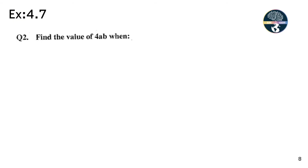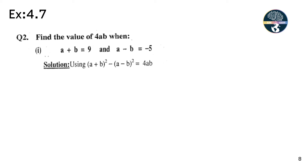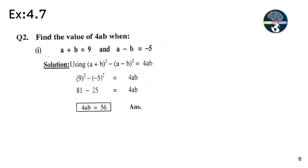Question 2: Find the value of 4ab when a + b = 9 and a - b = -5, using (a + b)² - (a - b)² = 4ab. Putting values: (9)² - (-5)² = 4ab, so 81 - 25 = 56. The value of 4ab = 56.